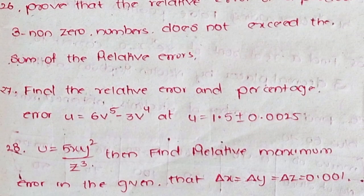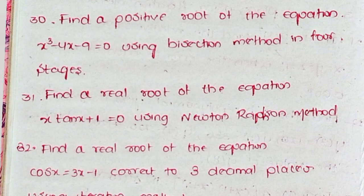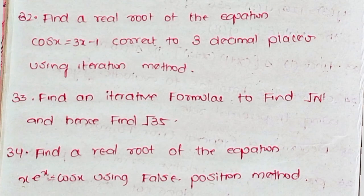Question 28: u = (5xy)²/z³. Then find relative maximum error given that Δx = Δy = Δz = 0.001. Question 29: Evaluate the sum S = √3 + √5 + √7 to 4 significant digits and find its absolute relative errors. Question 30: Find a positive root of the equation x³ - 4x - 9 = 0 using bisection method in 4 stages. Question 31: Find a real root of the equation x tan(x) + 1 = 0 using Raphson method. Question 32: Find a real root of the equation cos(x) = 3x - 1 correct to three decimal places using iteration method.